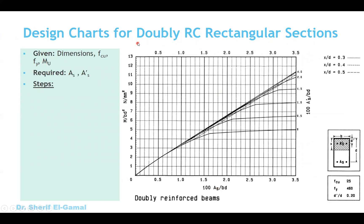Now let's move to the second type of charts, which is for doubly reinforced rectangular sections — charts 3 to 20. Here we have area of tension steel AS and also AS-dash, the compression steel. The distance D-dash is from the compression face to the compression steel, and D is the effective depth. These charts depend on three values: FCU, FY yield, and D-dash over D. We have different charts for FY 250 and 460, and also different charts for D-dash over D values of 0.05, 0.10, 0.15, and 0.20.